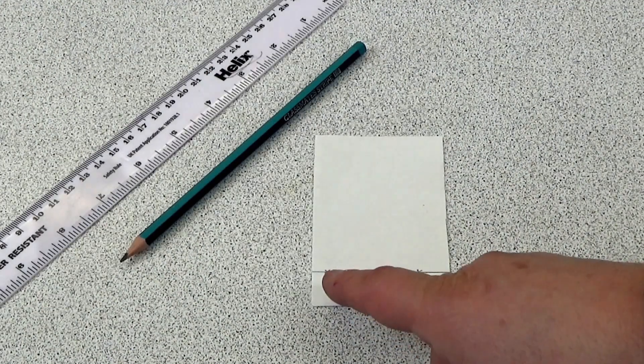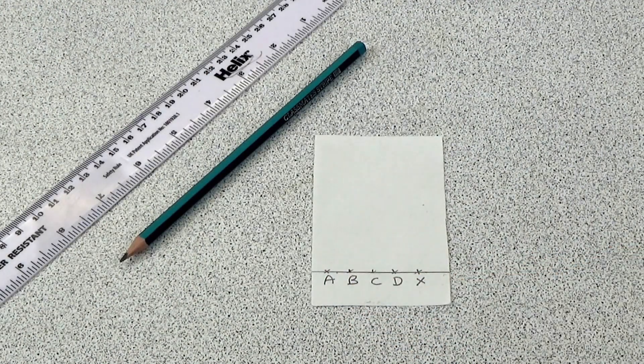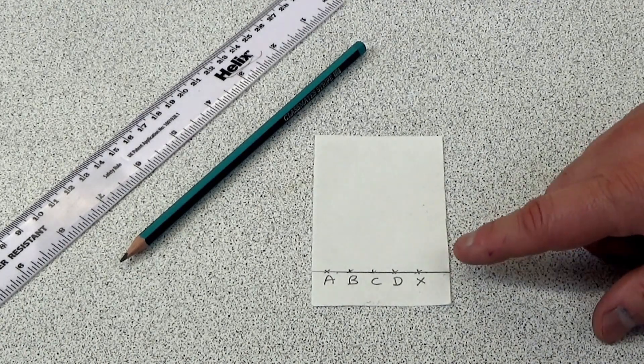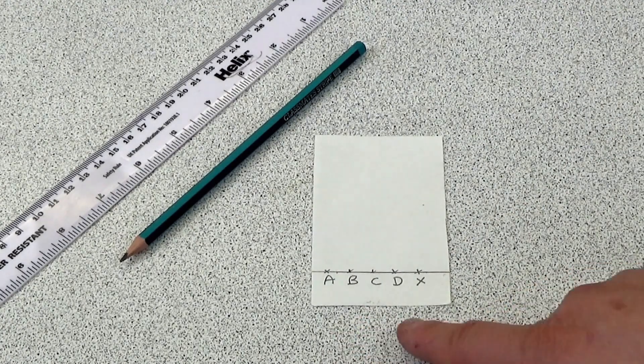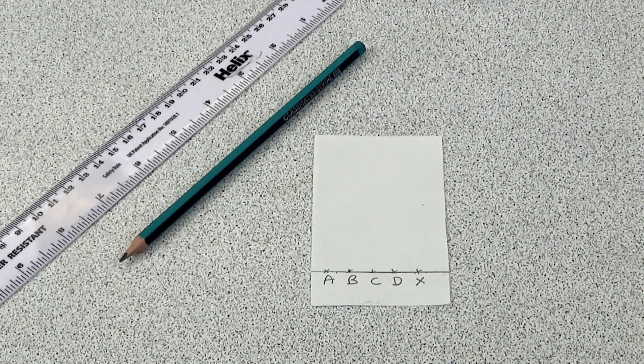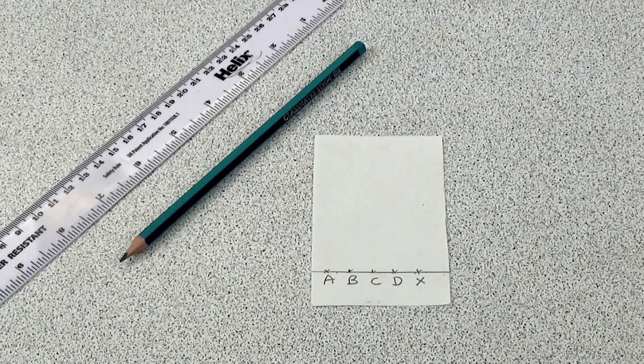We then mark five small crosses along the start line, making sure we keep at least five millimeters away from the edge of the paper and we label them ABCD for the known samples and X for the unknown food dye.